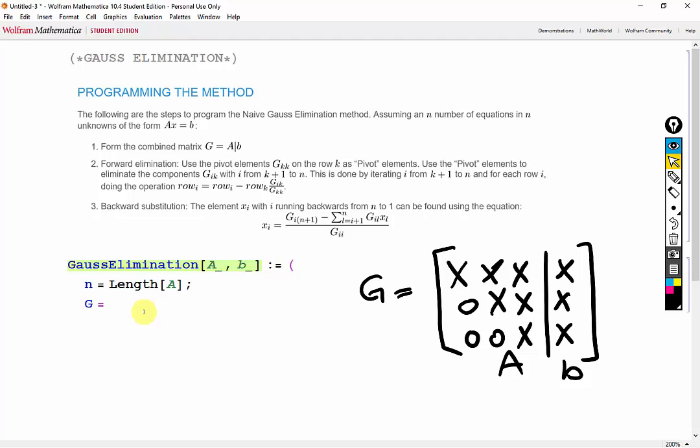Since inserting B directly into A will add it as a row, we need to first transpose A. Then we can insert B into the last position, and then we have to transpose back.